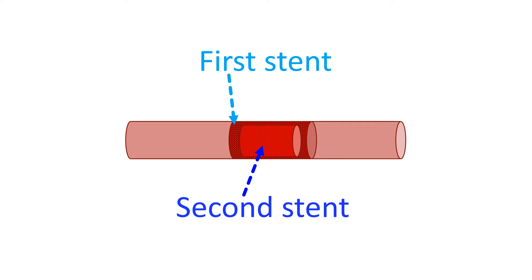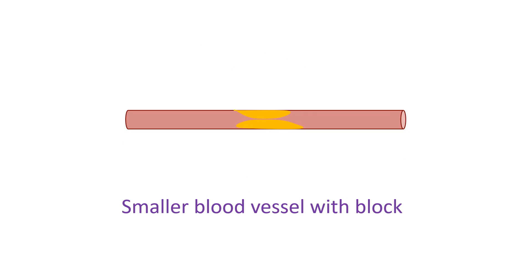In recurrent narrowing of a stented region, as there is a metal implant already in place, implanting another stent will increase the total metallic implant. Another potential reason to use a drug coated balloon is after removing a block in a small blood vessel, the size of which is not ideal for implantation of a stent.